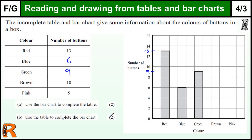Use the table to complete the bar chart — here we're looking for a 10. So we need to draw a bar that is 10 high, going up to the 10 and back down again. As you've got some drawn already for you, you shouldn't make any mistakes on this. And then the pink one is 5, so that's halfway between the 4 and the 6.